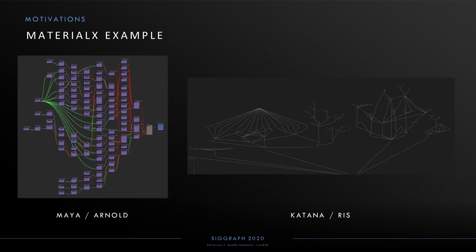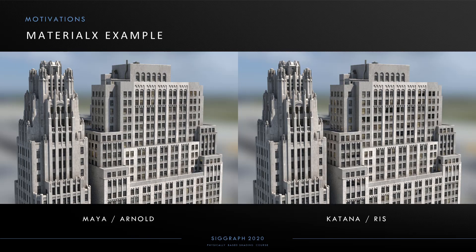To get a sense of what a MaterialX graph looks like, here's an example from the film Ready Player One, where it expressed the surface material for a building in the New York City sequence. We're seeing the pattern graphs for a complex surface material asset in two very different environments: Maya using Solid Angle's Arnold renderer, and Katana using Pixar's RIS renderer. MaterialX was used to describe this shading graph in a unified way across these environments with comparable render results.